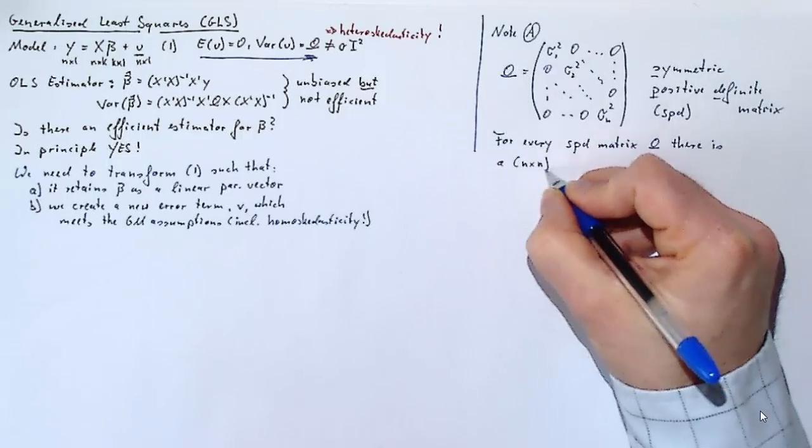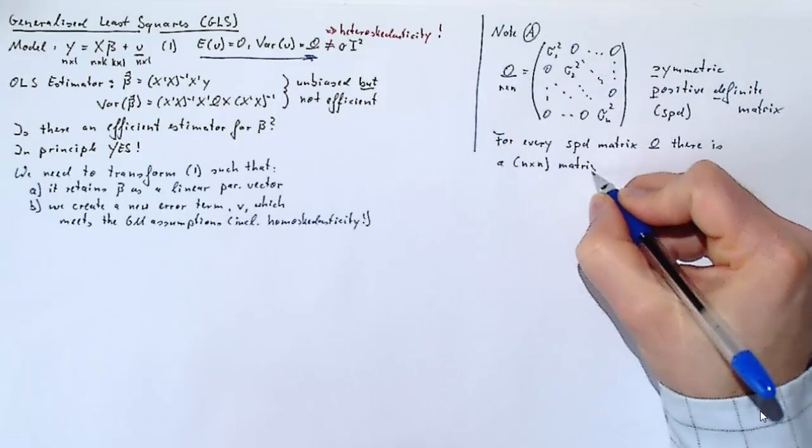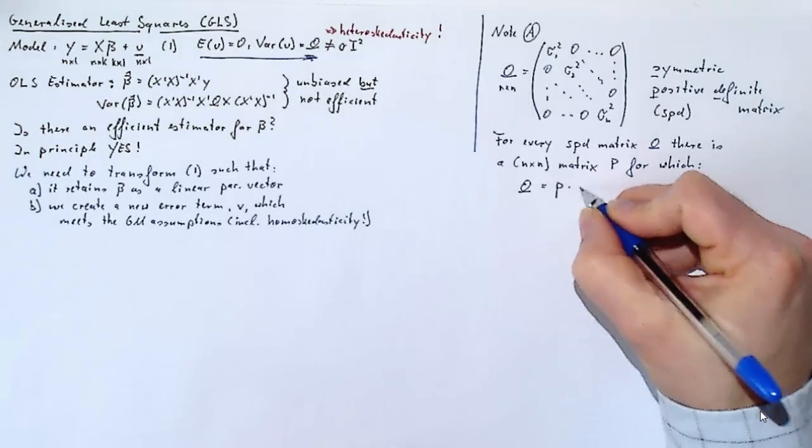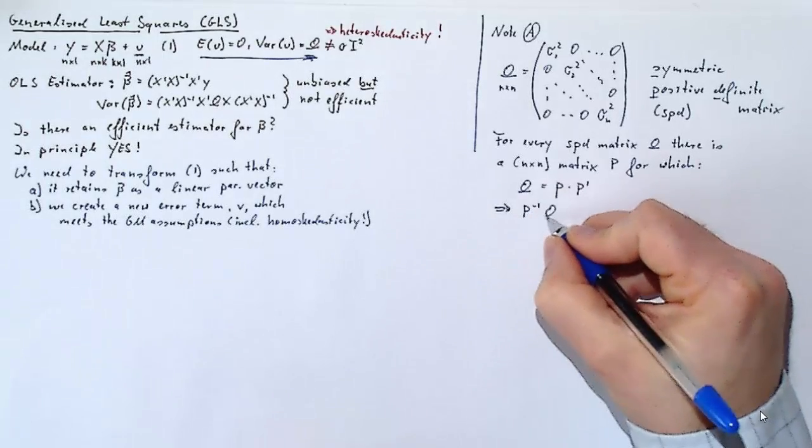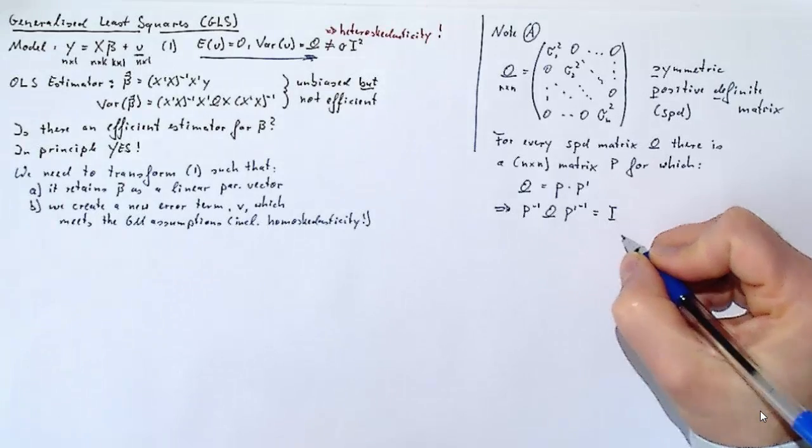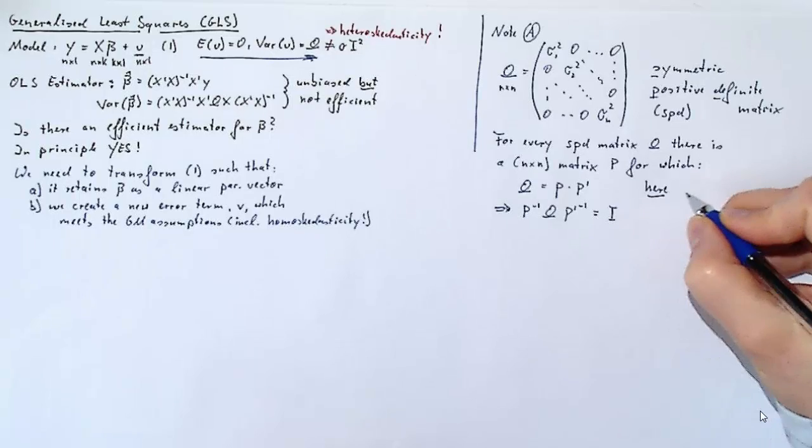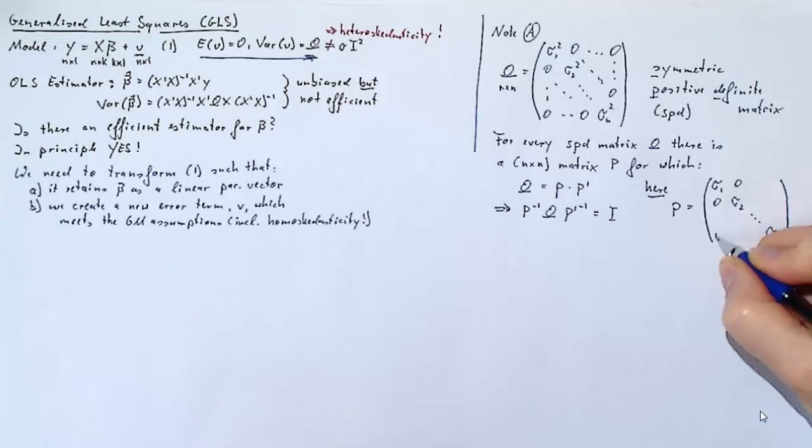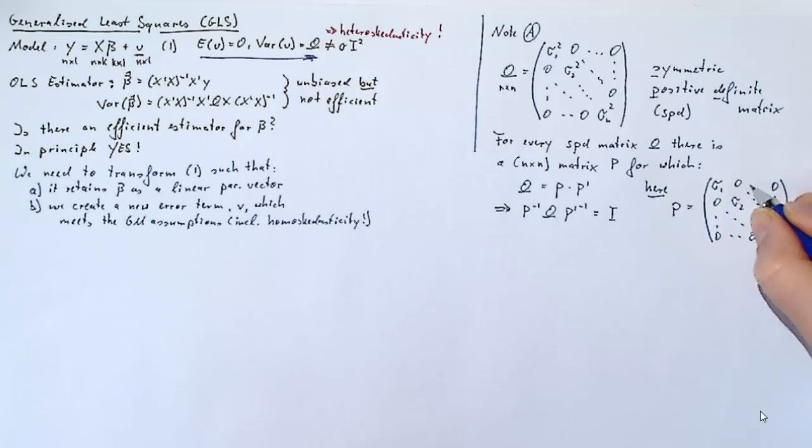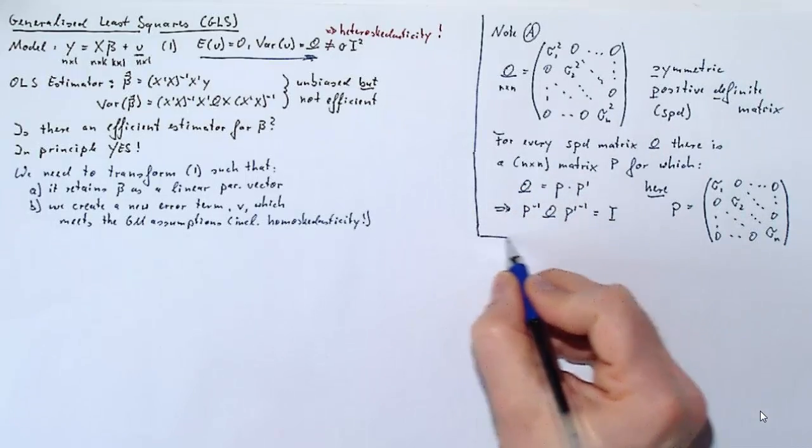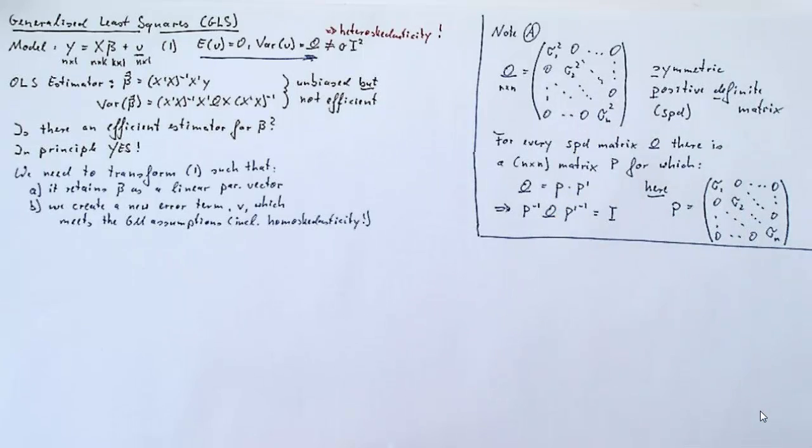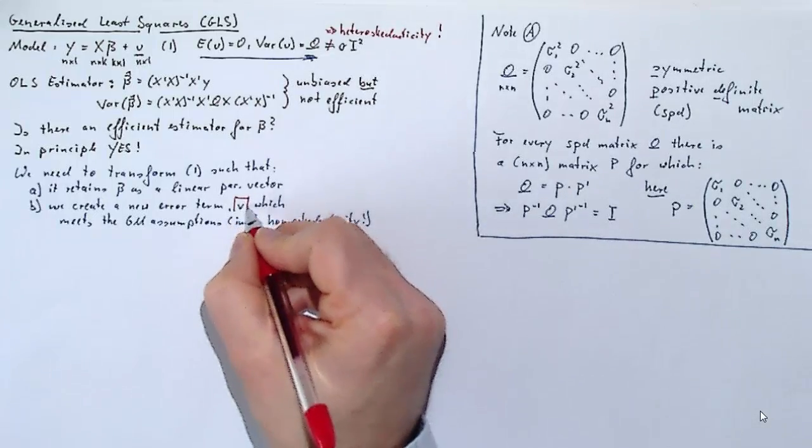It's important that you understand the structure of this omega in the case of heteroscedasticity. We have different variances on the diagonal. Now, for every symmetric and positive definite matrix omega, there is another matrix equally n-by-n, same dimension as omega, and we shall call that other matrix P, for which the following is valid: omega equals P times P prime. In some sense, this is like taking a square root, or P is some sort of square root matrix. Now, we can just pre- and post-multiply with P inverse, and then we get this result: P inverse omega P prime inverse should be equal to the identity matrix. Now, here it's pretty obvious what P should be. It should just be the individual standard deviations, sigma 1. Because then, if we multiply P with P prime, we get sigma 1 squared, and then sigma 2 squared on the second diagonal element.